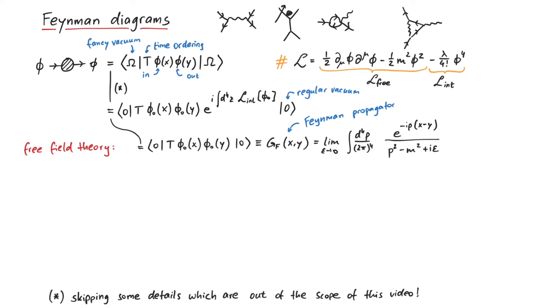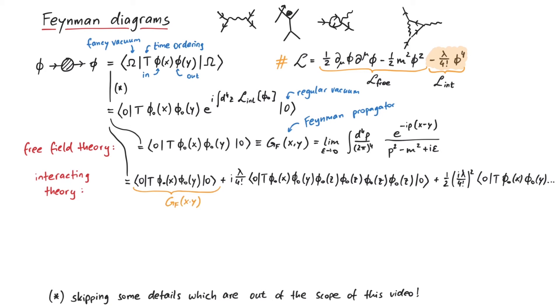However when the fields can interact with each other, things start to get interesting. Remember this is the interaction in the Lagrangian where lambda is a small parameter. We can then expand the exponential in the Taylor series and get the following amplitudes. The first term is again the Feynman propagator, but the following terms are new. To calculate them we must use Wick's theorem and pick out pairs of fields in order to construct a Feynman propagator. And we have to account for any permutation.